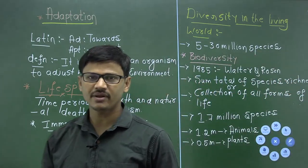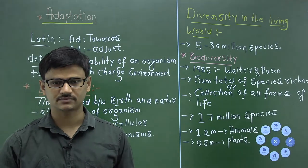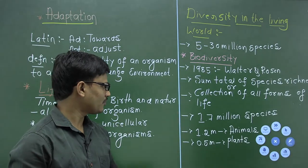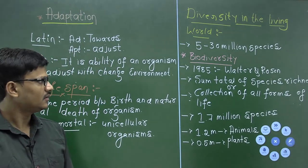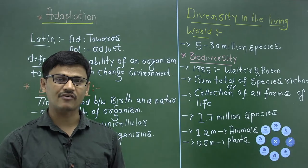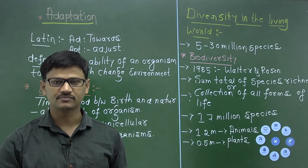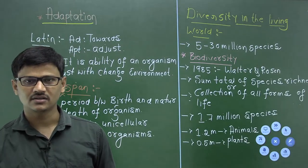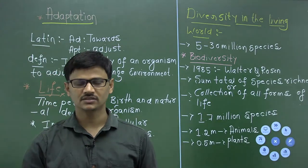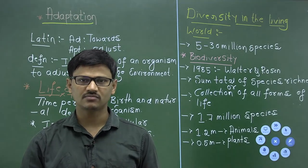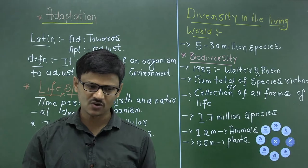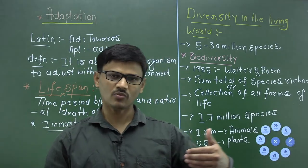Most animals and plants are known by a particular local name, which is also called a vernacular name. However, there is one problem with vernacular names — they vary from one area to another. The animal or plant is the same, but the name given varies from place to place, which leads to confusion.